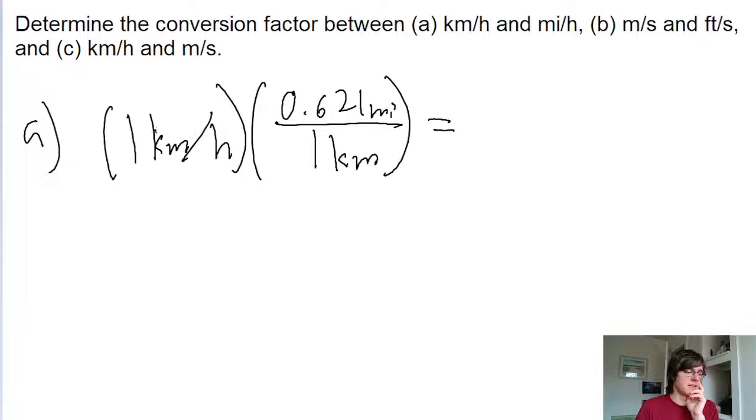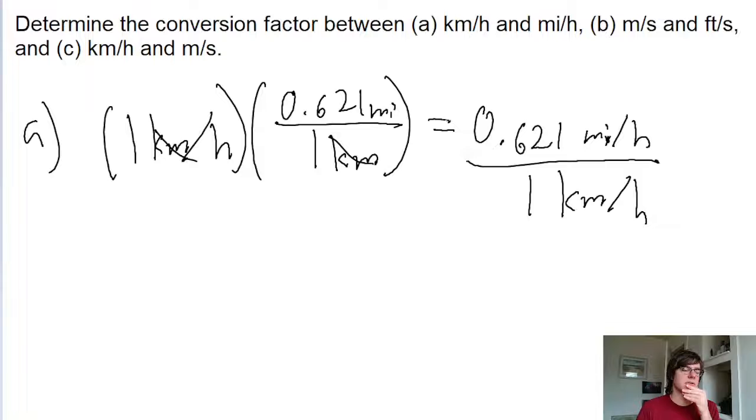Put this into a calculator - the kilometers cancel out and are replaced with miles, giving us 0.621 miles per hour. Not even a calculator necessary since it's just a number times one. This tells us that 0.621 miles per hour is equivalent to one kilometer per hour, and that's our conversion factor for part A.